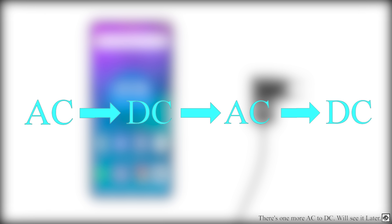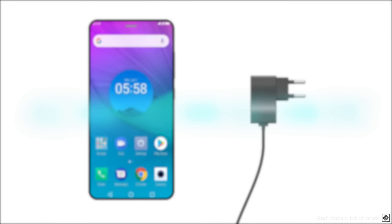First, it converts AC to DC then again back to AC and then finally to DC. Today we are going to see how the charger does this and why are there intermediate steps?